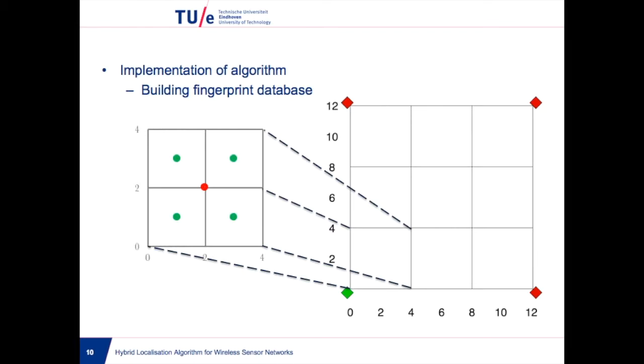Then we collected samples at the center of each smaller square, represented by the green marks, and calculated the average, represented by the red mark in the middle.